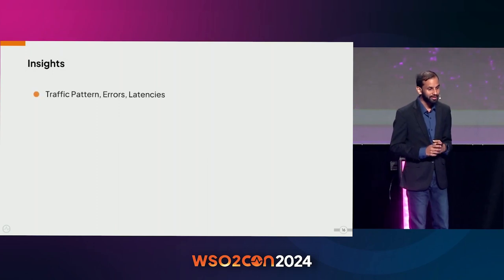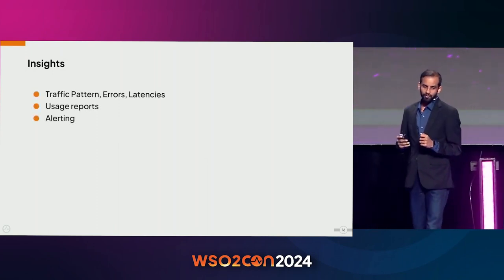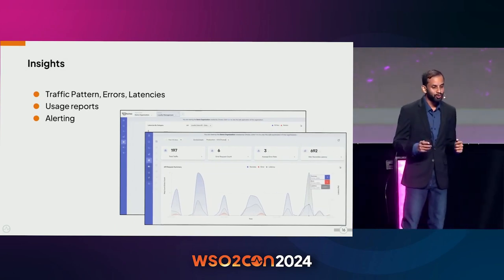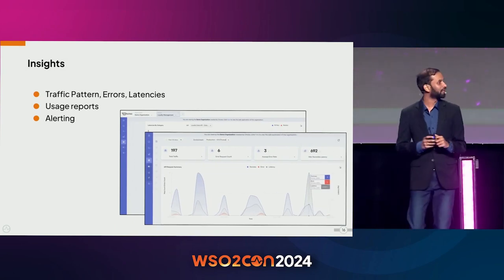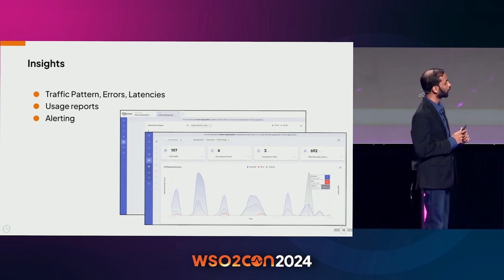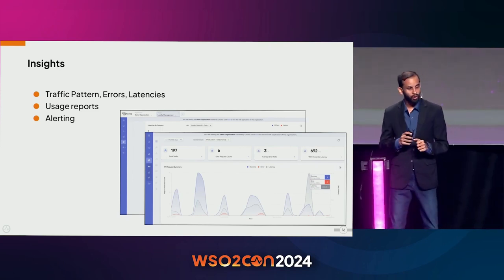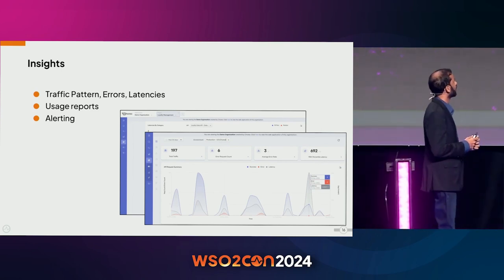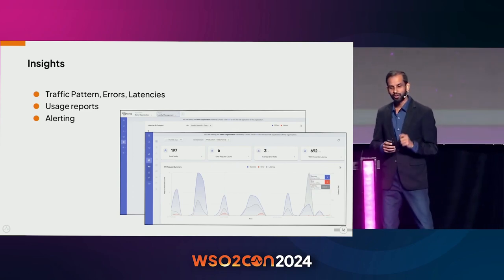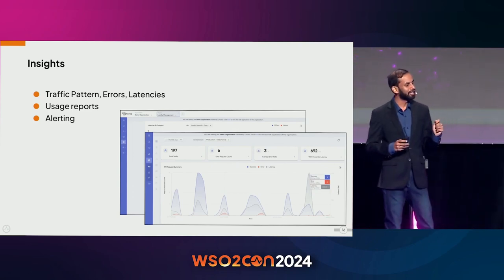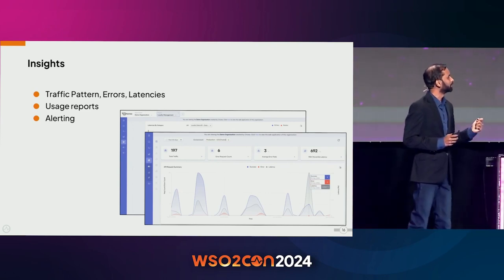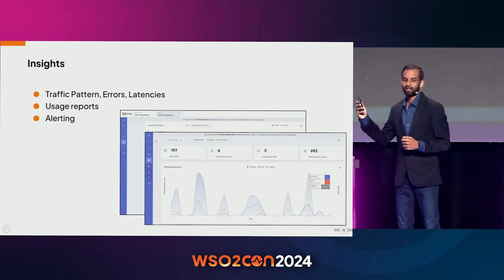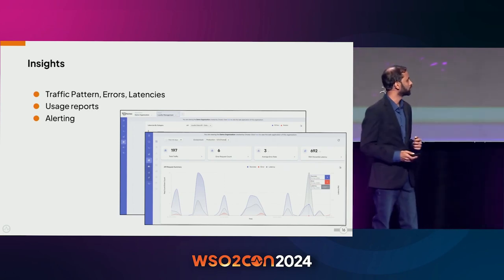Insights — having a view on the usage of your APIs is also critical. We have a rich set of analytics capabilities in Choreo that allow you to monitor traffic patterns, errors, and latencies, generate usage reports, and set up alerting to track any anomalies. All of these things are built into the Choreo platform, so you don't have to consume a third-party service or integrate with third-party services to get insights on the APIs you expose through your system.